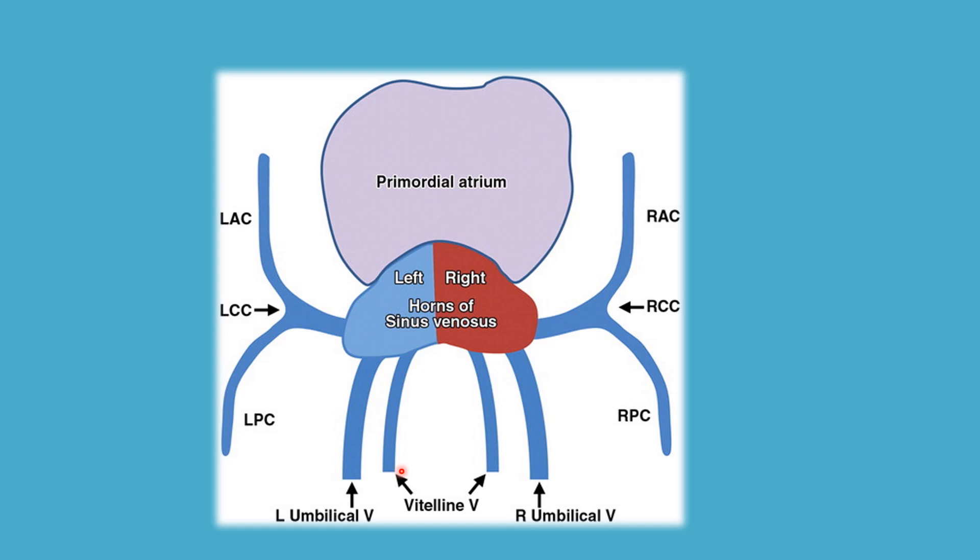Ventrally, the sinus venosus communicates with the primitive atrium through the sinoatrial orifice. Later, a sickle-shaped fold develops from the left side of the orifice. This reduces the size of the orifice and the part of the left horn gets absorbed towards the right side of the dorsal wall of the primitive atrium. As a result, the entire volume of blood is conveyed to the right half of the primitive atrium.